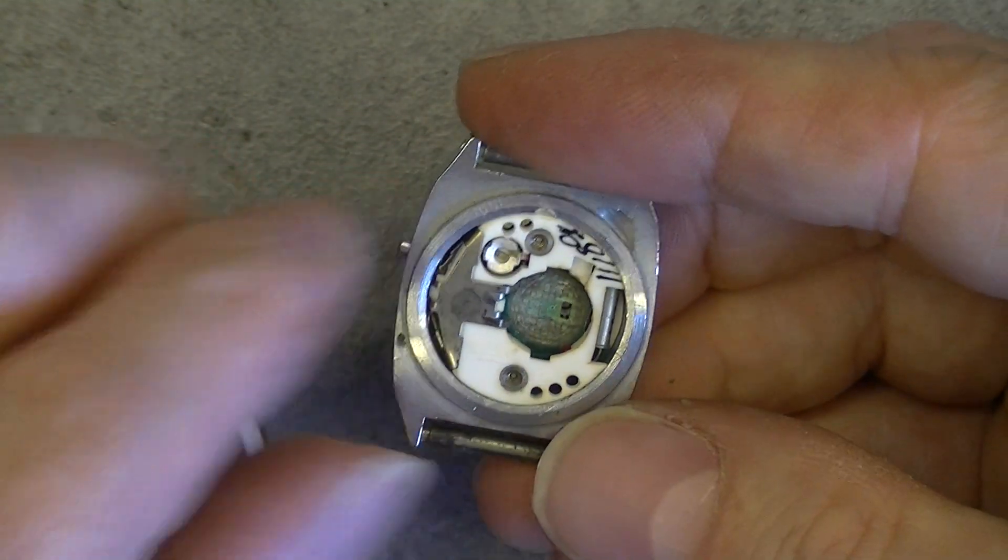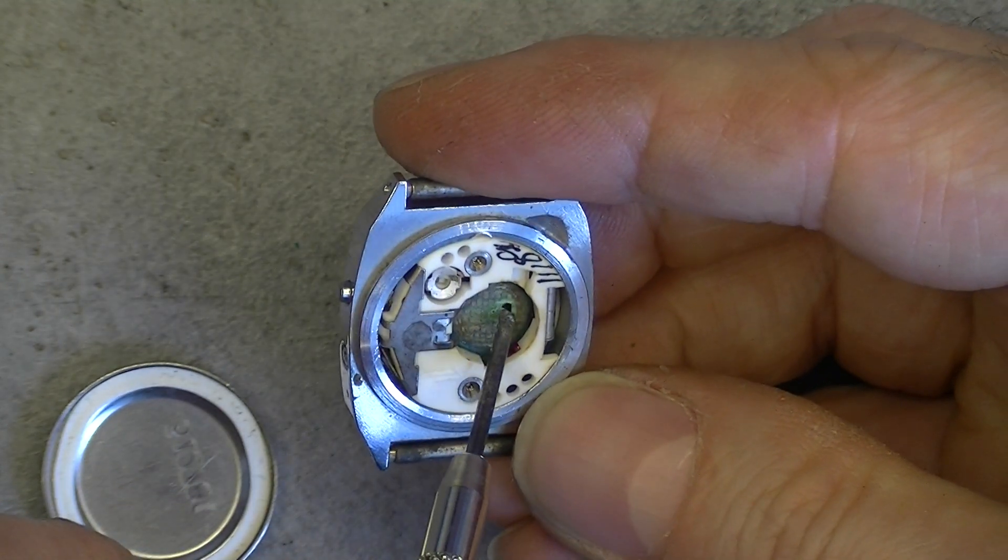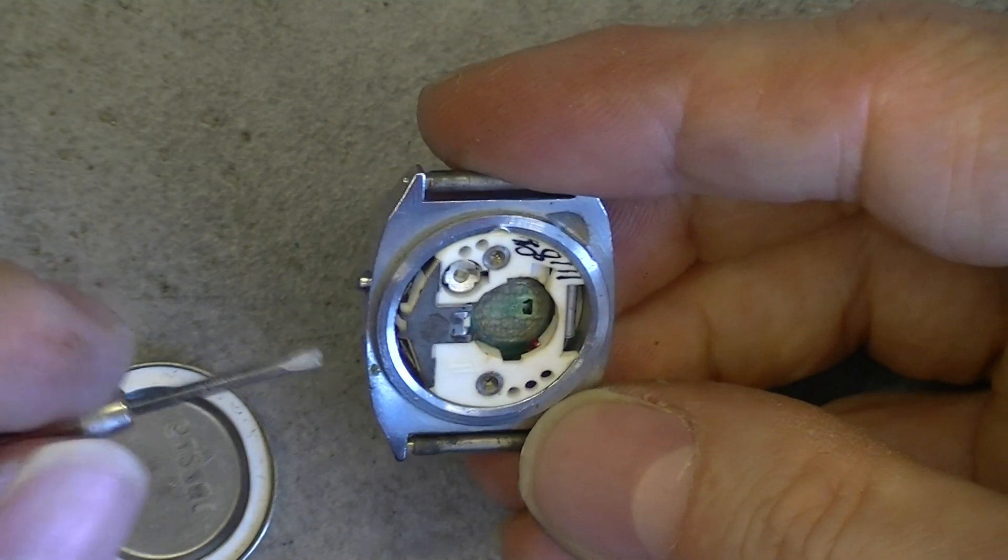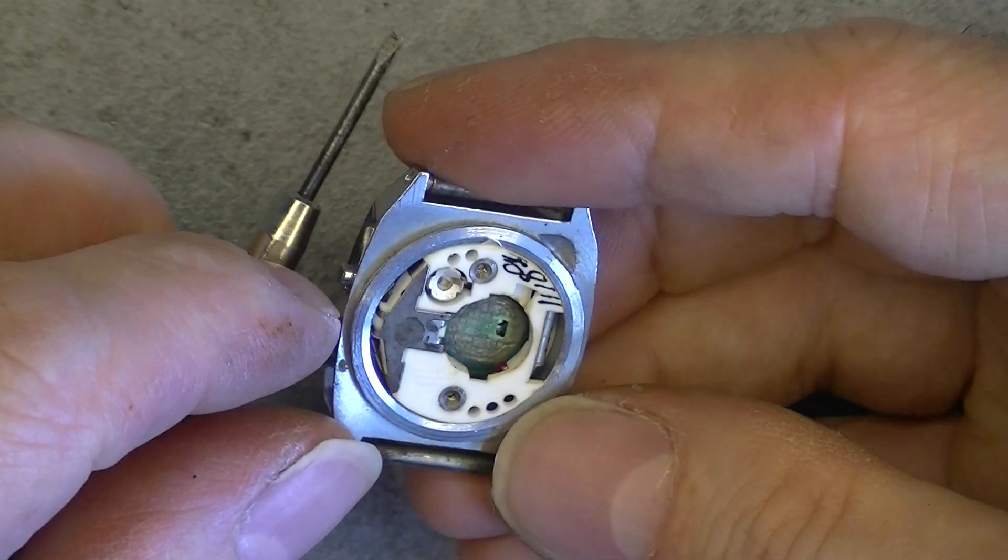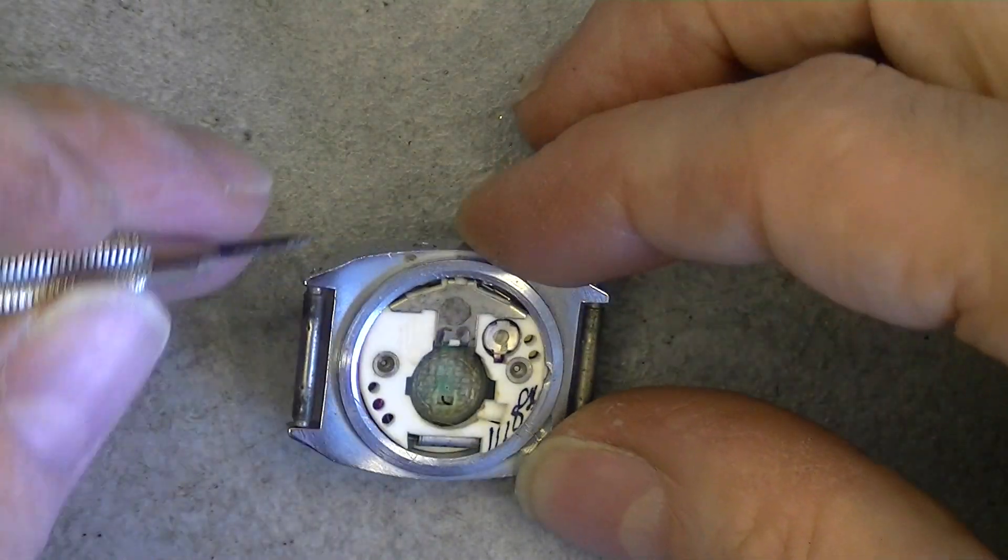There is something weird. I do see only one contact to this battery. It looks like we are missing a second contact here. And apart from this I see a green PCB.